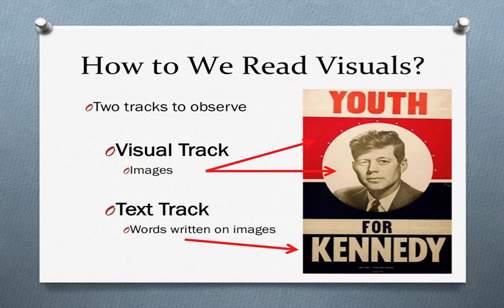Step two: once we've decided to set aside our own bias, we have to observe the two main tracks of visual images. One is the visual track — those are things that we see: colors, arrangement, positioning, the size of things, and the font that's used. Those are visual track elements.